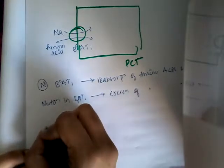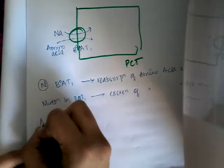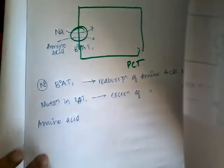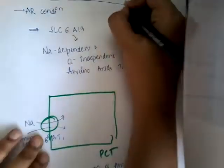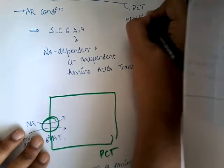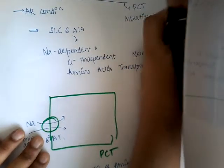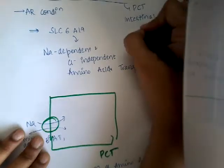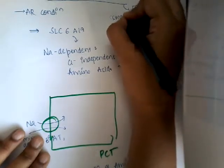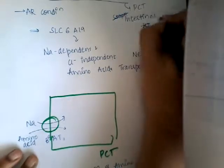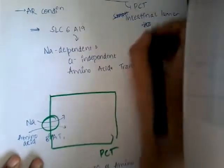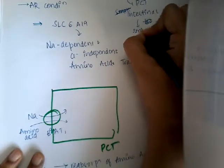What are the major amino acids involved? This amino acid transport defect occurs not only in the proximal convoluted tubule, but also in the intestinal lumen — most commonly the small intestine.